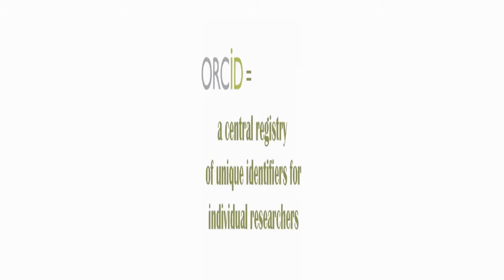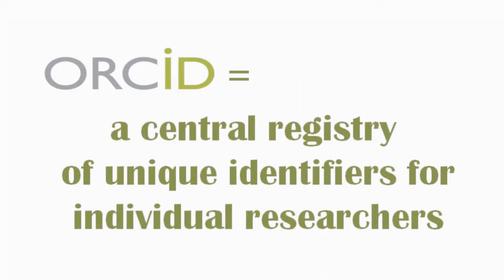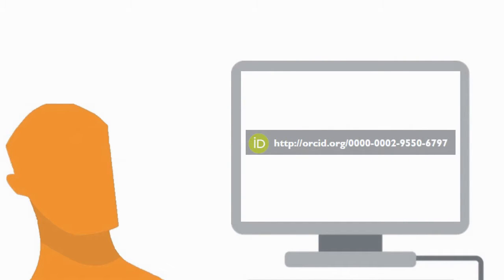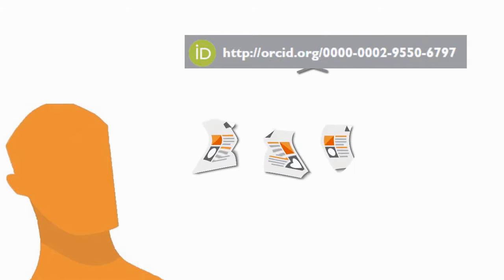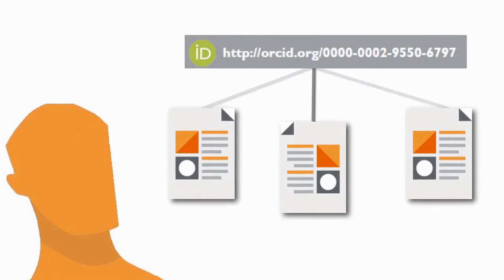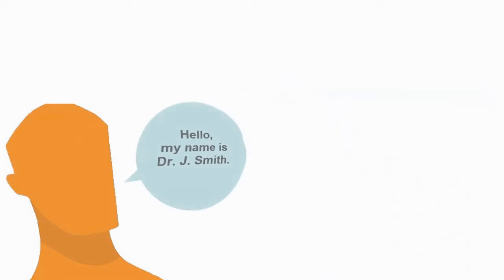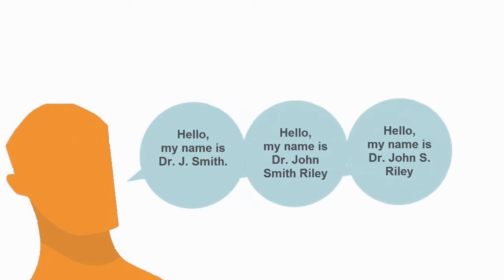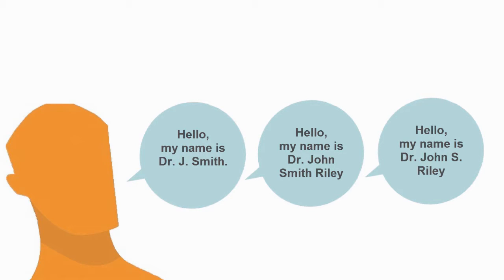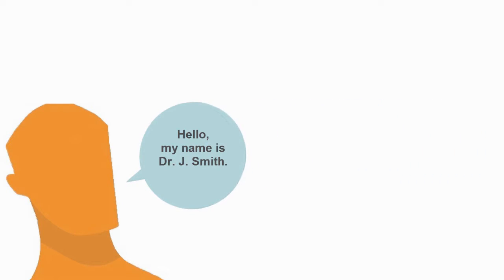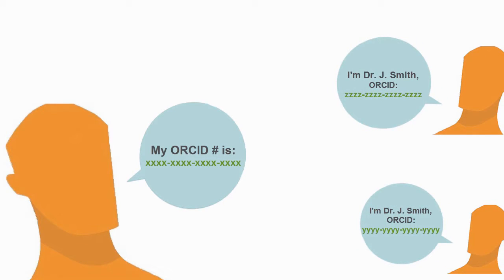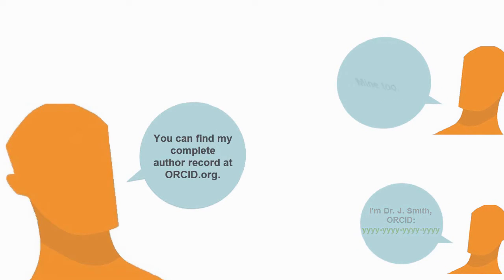It provides a central registry of unique identifiers for individual researchers, meaning once you register for a unique and persistent digital identifier, that identifier can be linked to your research activities to form your complete author record. So whether you have a common name or have published under multiple names or name variations, identifying your work with a unique ORCID number helps distinguish you from other authors and maintain a complete and current record.